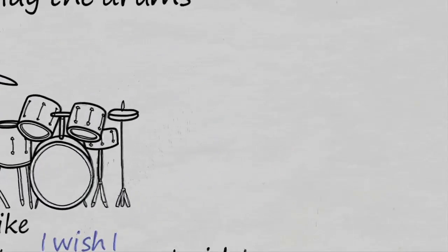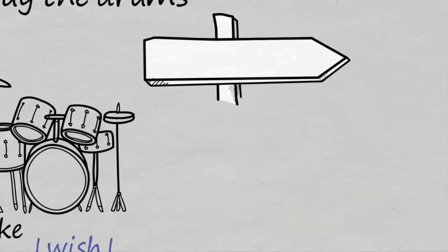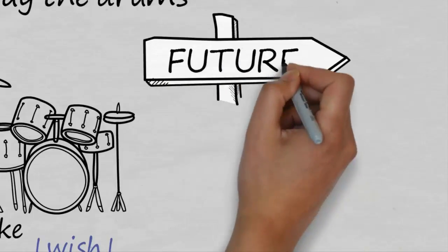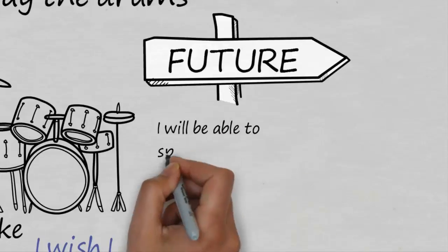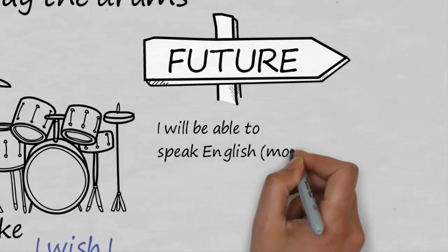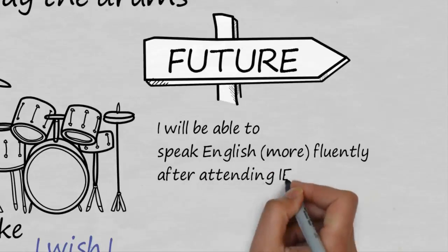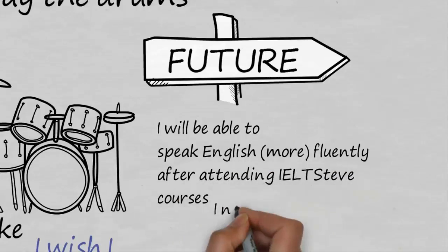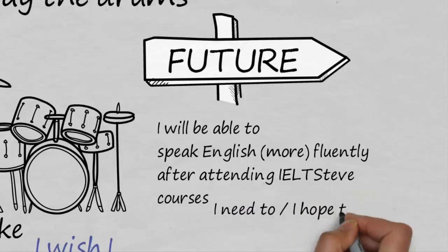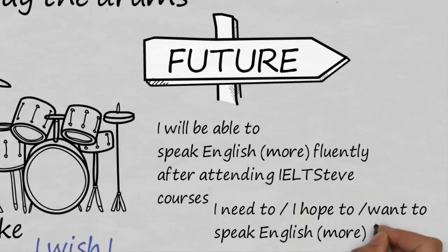For the third conditional, we cannot use could. In terms of talking about the future in English with ability, we're going to use able to, and we're not going to use can. So for the future, we need to use: 'I will be able to speak English more fluently after attending our Steve courses,' for example. Just remember, you don't always need to use the word able to or can — we can just say 'I need to speak English,' or 'I hope to,' or 'I want to.' But today we're focusing on ability.